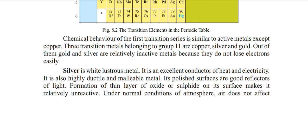Silver is an important industrial metal. It is an excellent conductor of heat and electricity. It is also a highly ductile and malleable metal. Its polished surfaces are good reflectors of light. Formation of thin layers of sulfur on its surface makes it relatively inactive under normal atmospheric conditions.